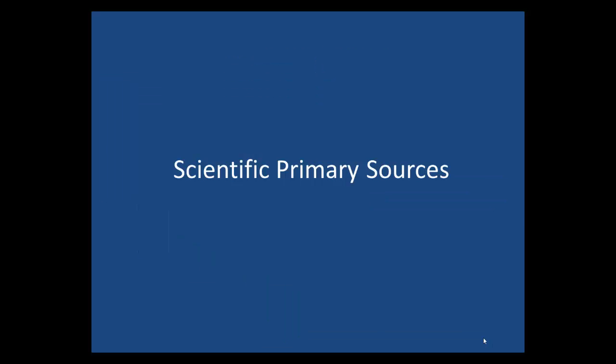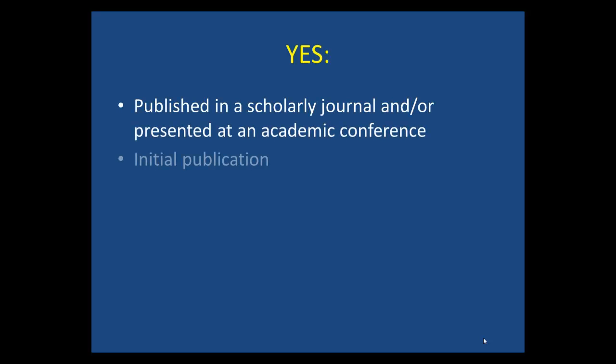However, in the sciences, primary source articles are something very specific. They are original material published in scholarly journals or presented at conferences, presenting new data, research, or theories, and written by the scholars who conducted that research.